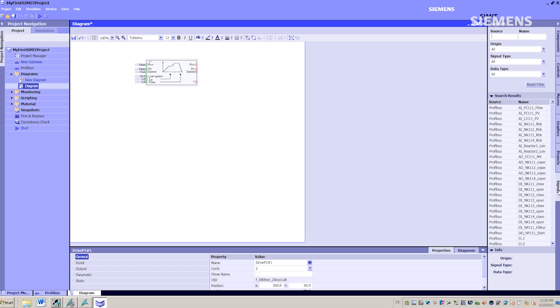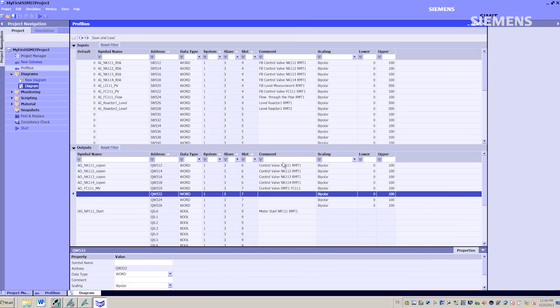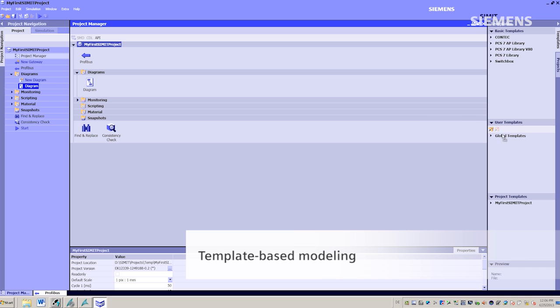I now connect an input and an output to the component. And my simulation model is ready to use. I store this as a template so that I can reuse it repeatedly in other projects.